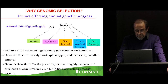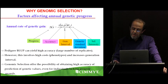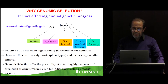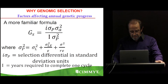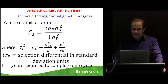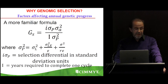Genomic selection offers the possibility of obtaining high accuracy of the prediction — more or less depending on the trait and the heritability of the trait. A more familiar formula includes: I, the intensity of selection; the standard phenotypic deviation; the additive genetic variance; the interval in years required for completing a cycle; and sigma-squared-p, the family mean variance, given by the variance of the line, the line-by-environment interaction, and the residual. Maybe you are more familiar with this formula than the previous one.